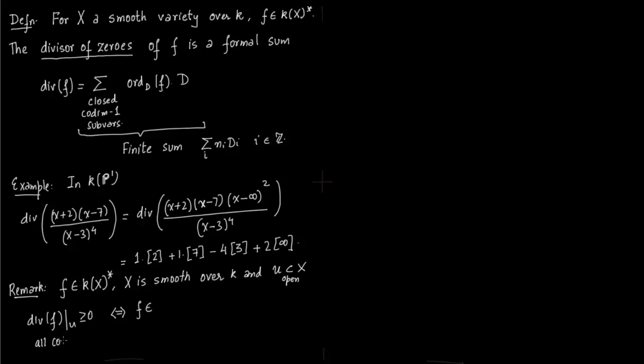This comes from the properties of the order which we described on the previous slide. So divisor of f greater or equal to 0 means that all these integers n_i in the finite sum are greater or equal to 0. And notice for D_i we are just having these square brackets - you cannot add 2 in the square bracket with 7 in the square bracket or with 3 or infinity.